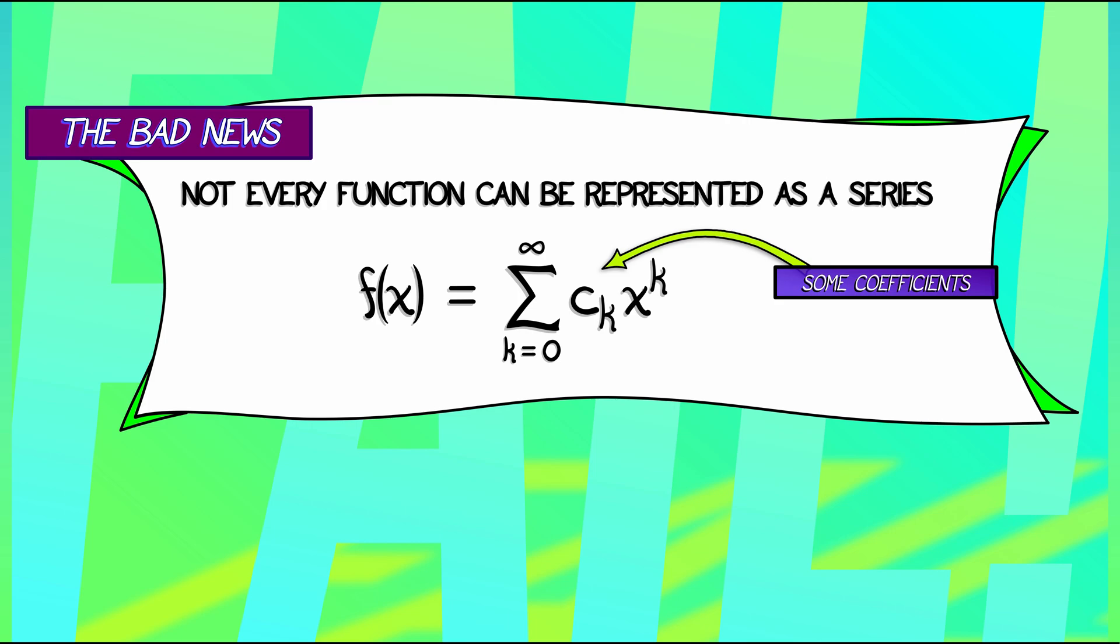In the case of a Taylor expansion, these constants are related to the derivatives of f divided by k factorial, that kind of thing.